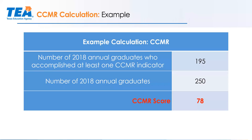To calculate CCMR, the denominator is your 2018 annual graduates — the students who graduated that summer of 2018. The numerator is those graduates who accomplish any one of the CCMR indicators, given one point of credit. Even if they meet multiple indicators, they only get one point of credit maximum. Graduates who only have the CTE coherent sequence coursework without the certification receive half a point.